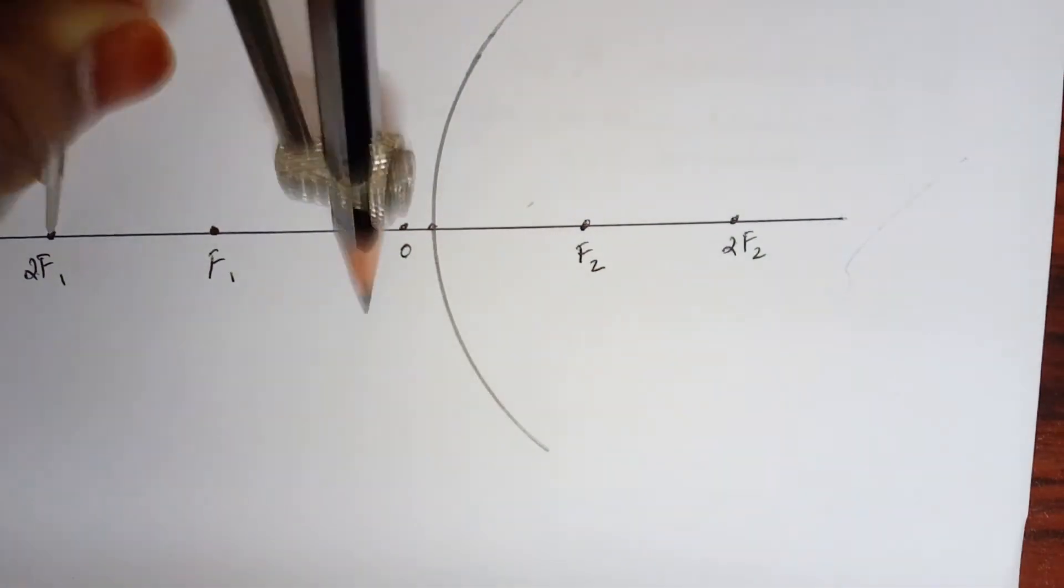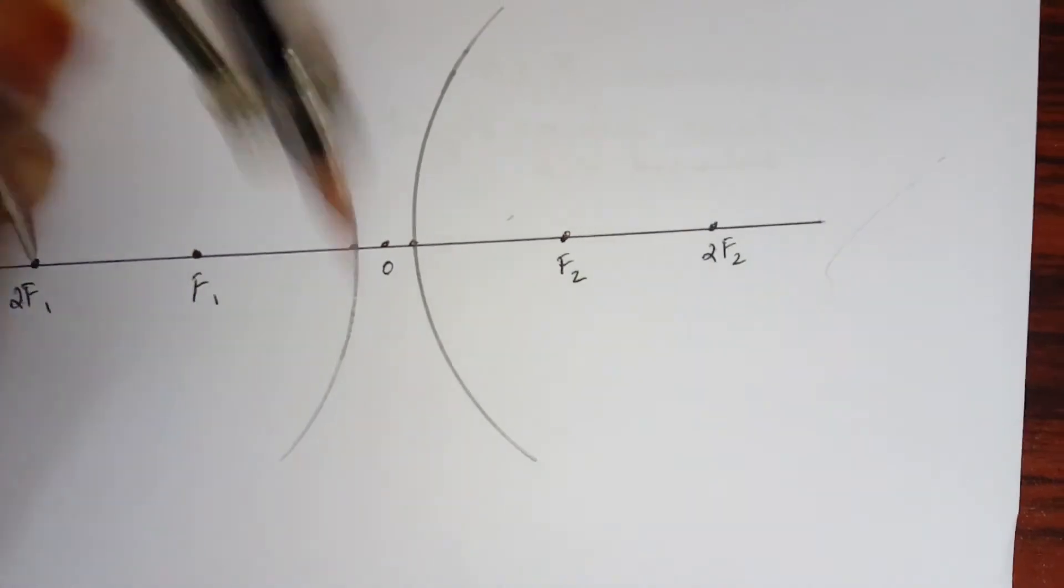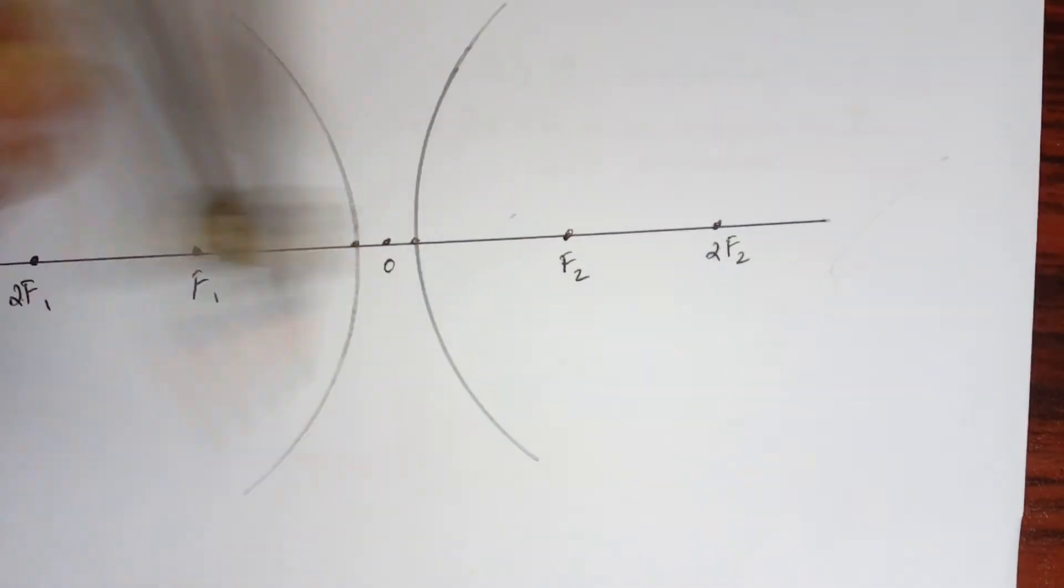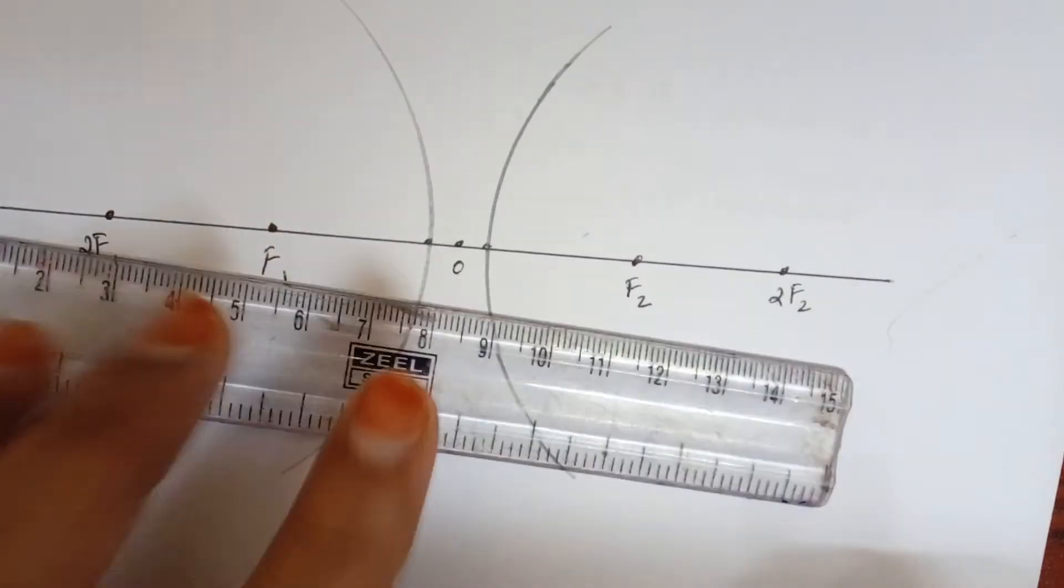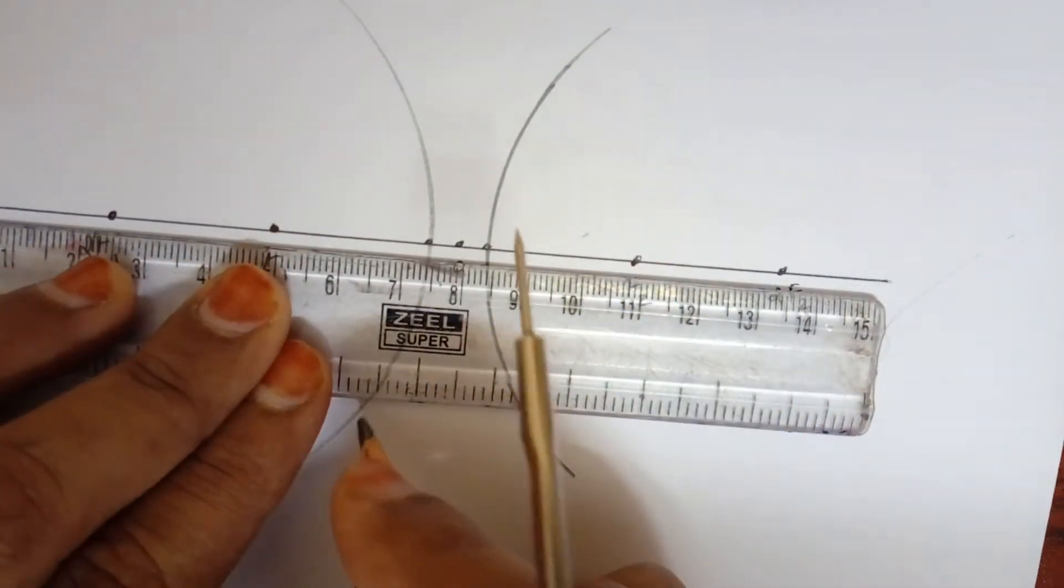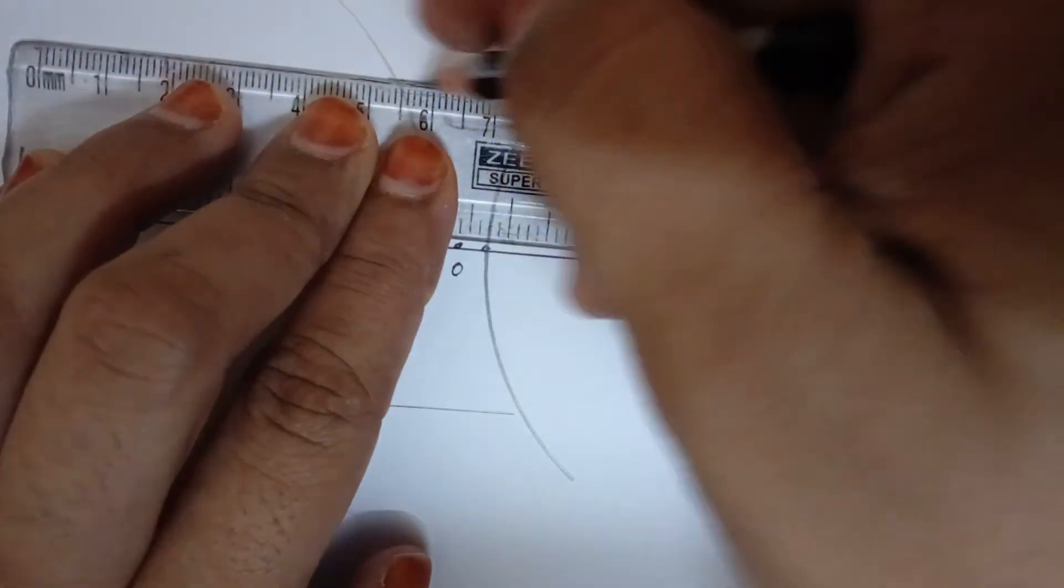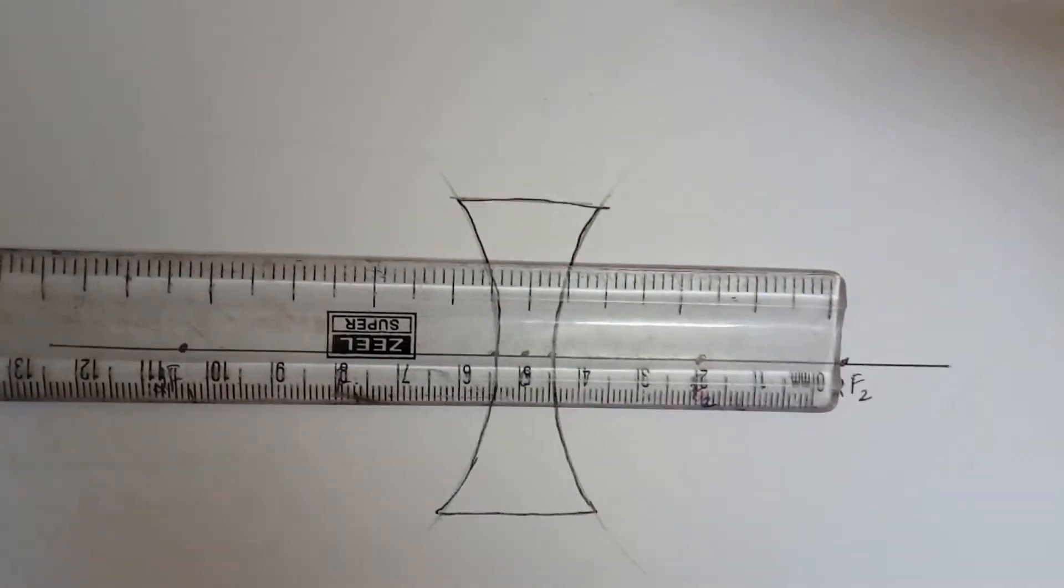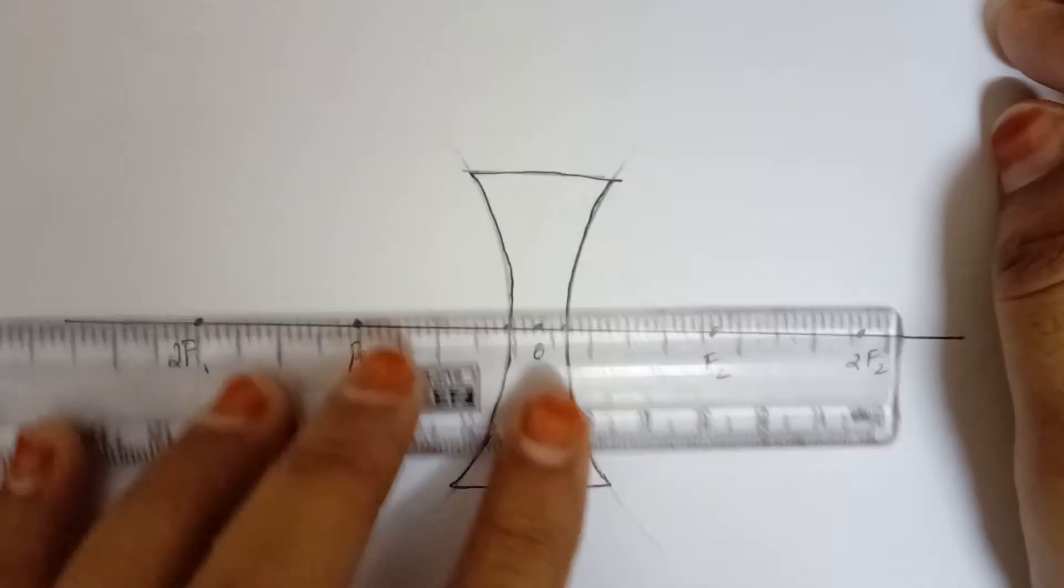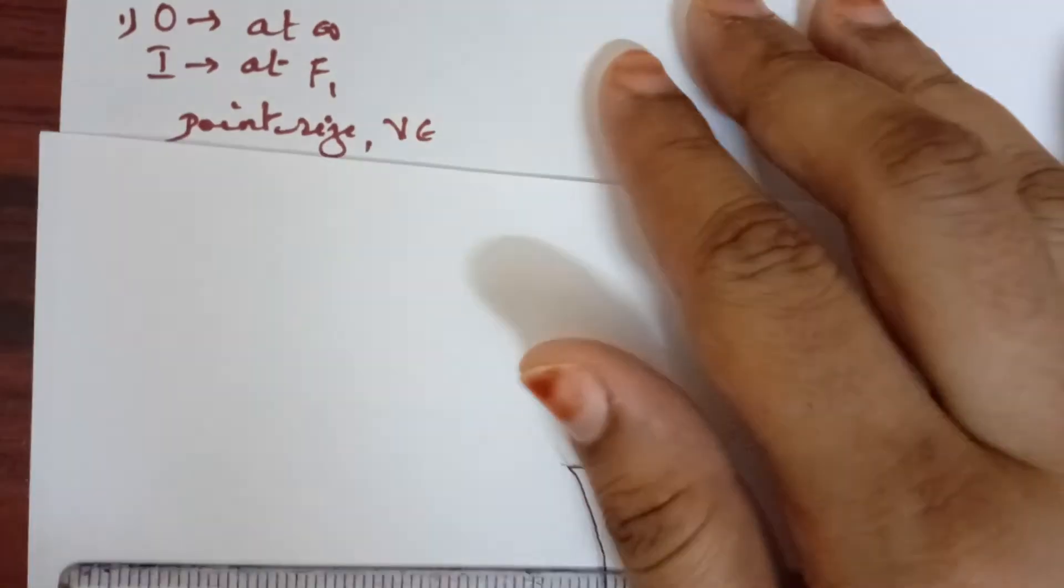And then I'm going to join this on this side as well as on this side. Going to rub the extra part. Okay, so here I have darkened the part. Now let's get started with the illustration.